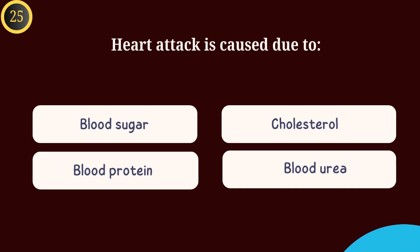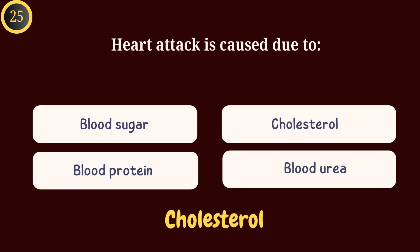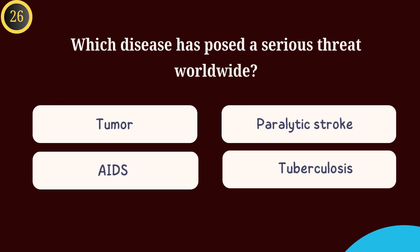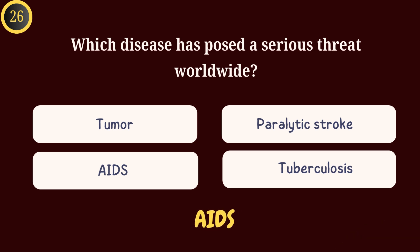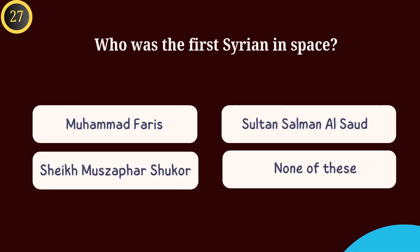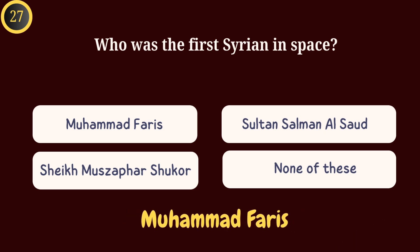Question 25: Heart attack is caused due to — Answer: Cholesterol. Question 26: Which of the following diseases has posed a serious threat the world over? Answer: AIDS. Question 27: Who was the first Syrian in space? Answer: Muhammad Faris.